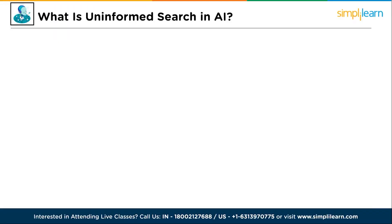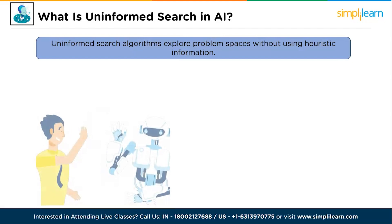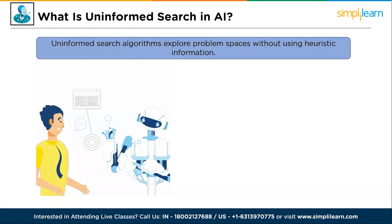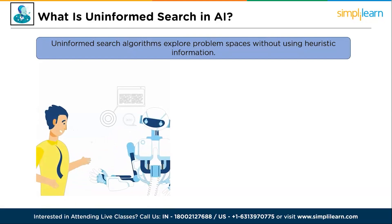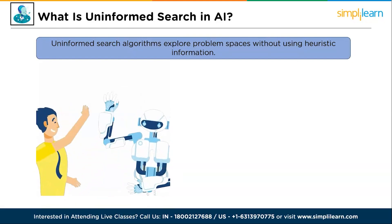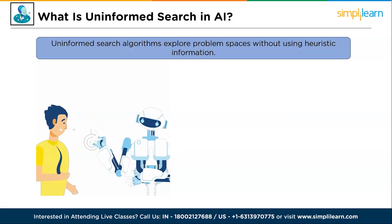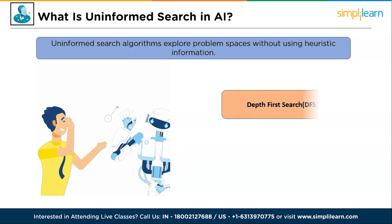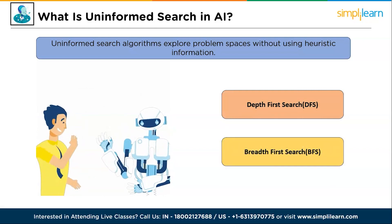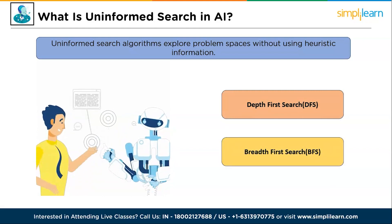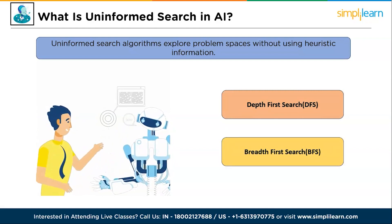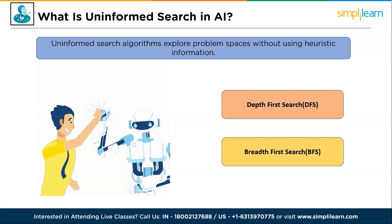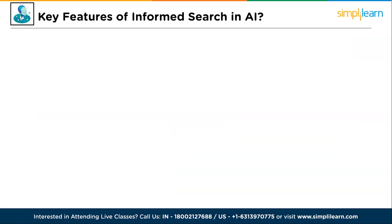So what is uninformed search in AI? Uninformed search algorithms explore problem spaces without using heuristic information. They traverse states and links based solely on problem structure — like depth first search and breadth first search — with completeness and simplicity, but potentially sacrificing efficiency in large search spaces.